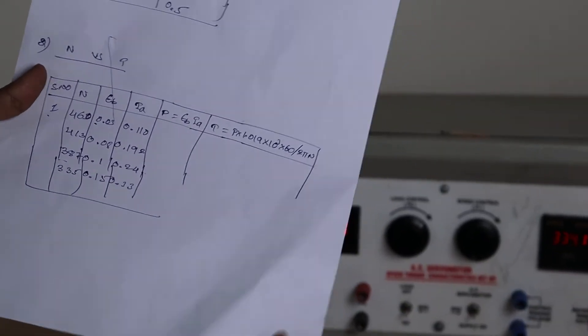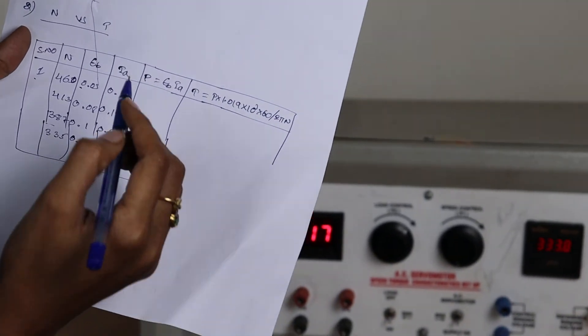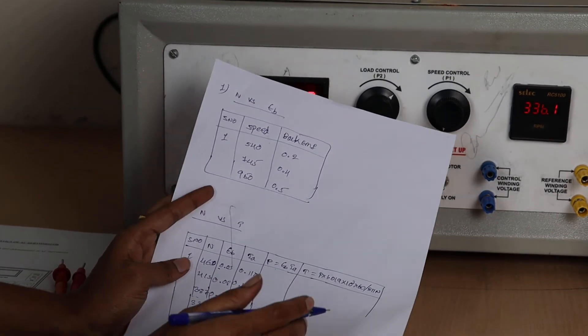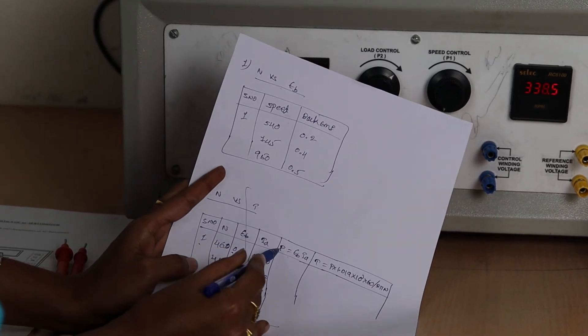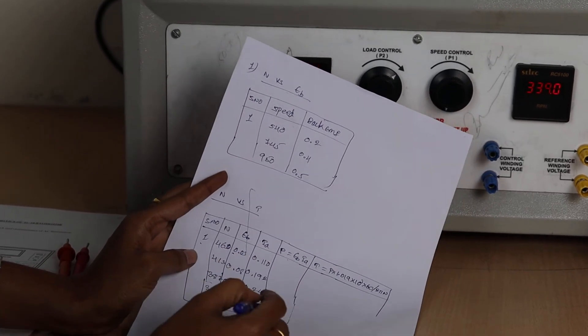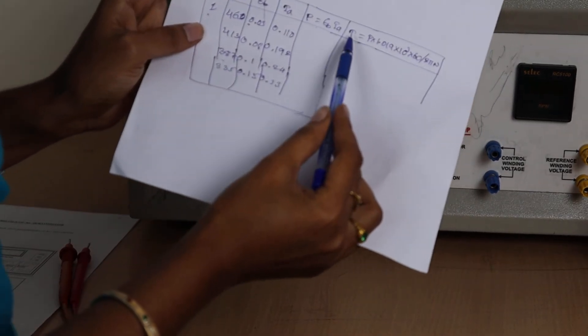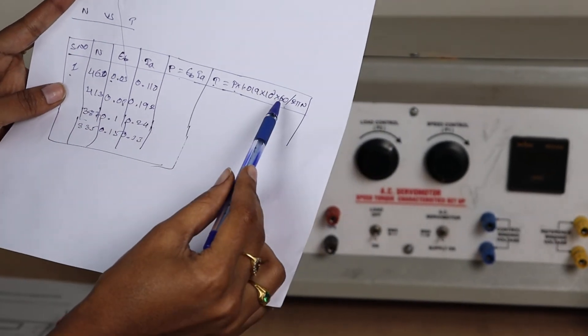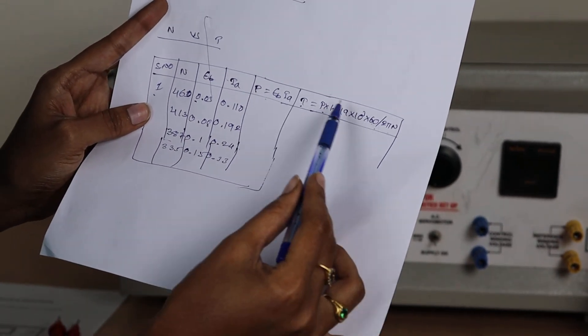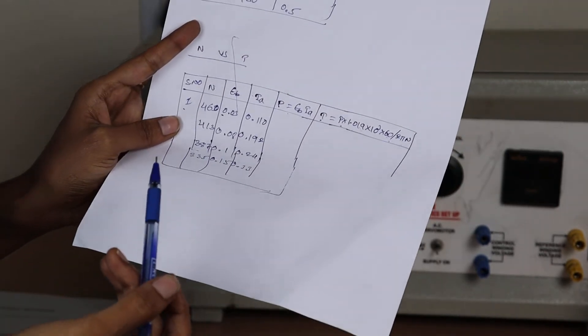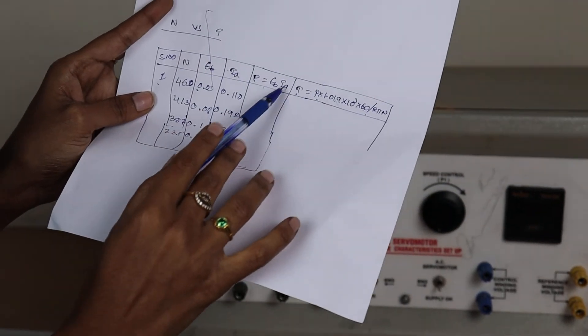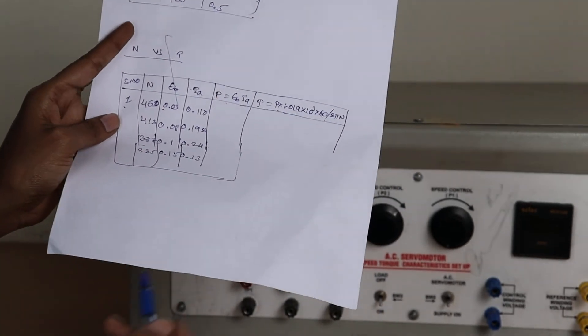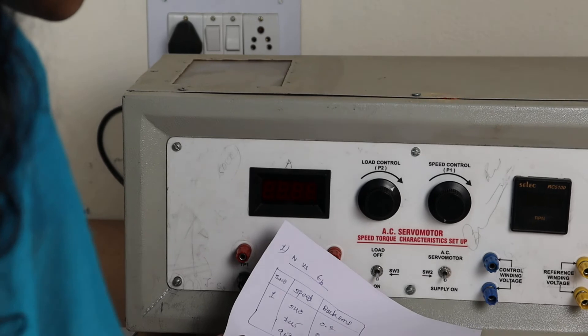Now by using these values you have to calculate power. So power value formula is equal to EB into IA. So EB is there, I is there. Multiply these two you can get power. And consider torque formula. Torque is equal to P divided by omega. Omega is equal to 2 pi n by 60. So this constant we are considering for AC servo motor. So by using this torque formula, calculate torque value of this AC servo motor for different values of loads.